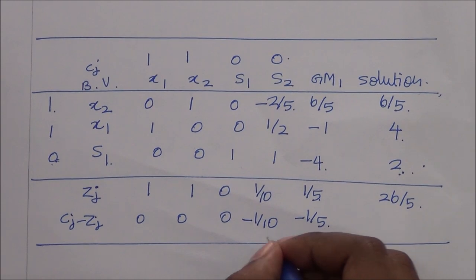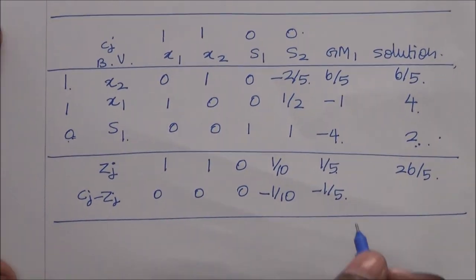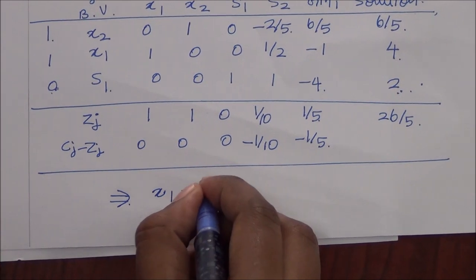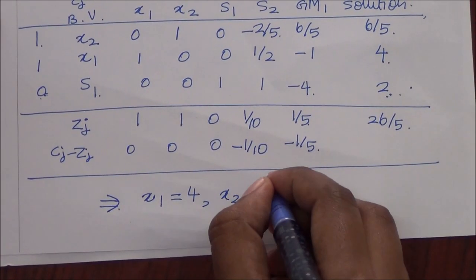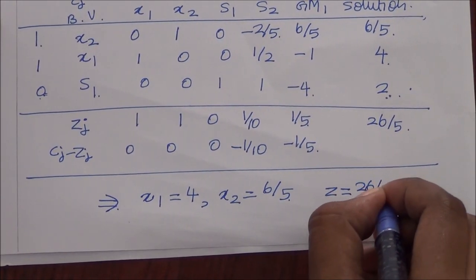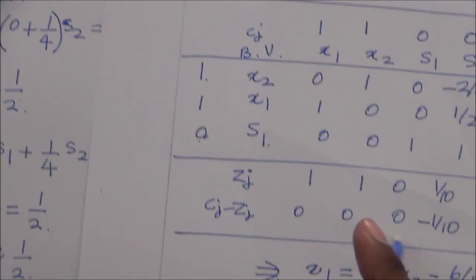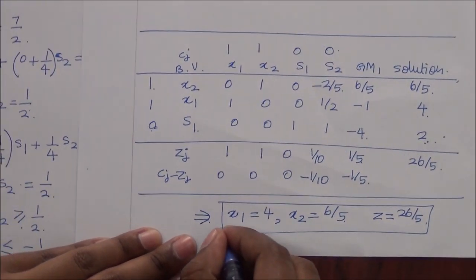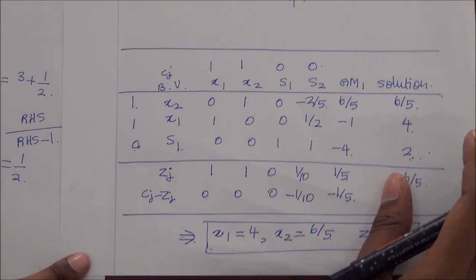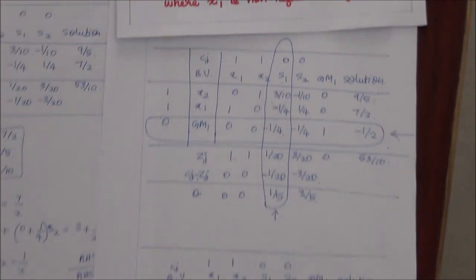As all cj minus zj values are now negative and there are no negative values in our solution, we have arrived at a feasible integer solution. That is, x1 equals 4, x2 equals 6 by 5, and z equals 26 by 5. This was obtained by introducing the Gomory cut and solving using the dual simplex method, satisfying the constraint that x1 is a non-negative integer. Thank you.